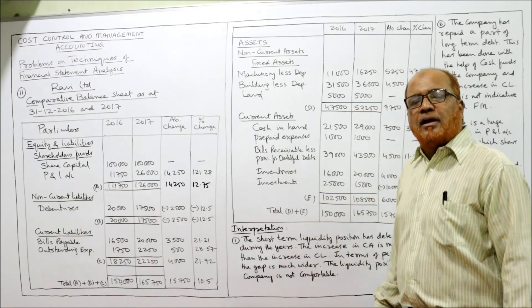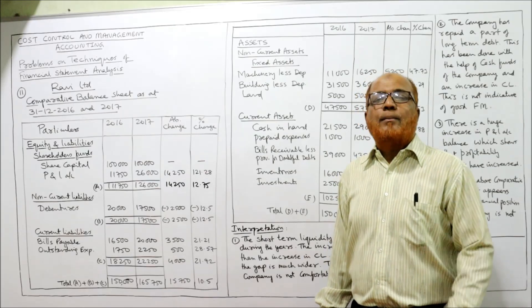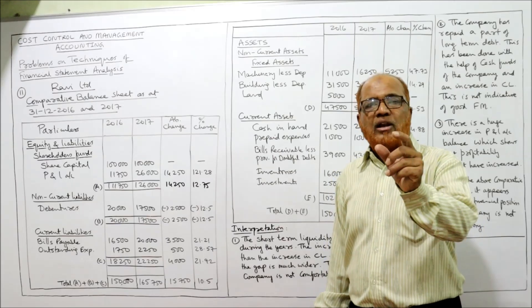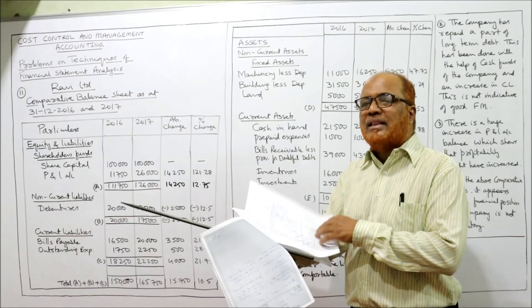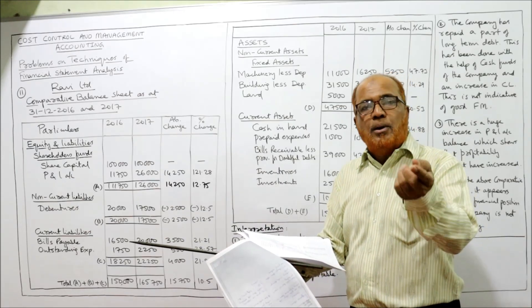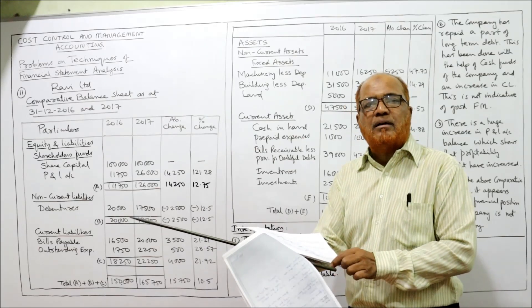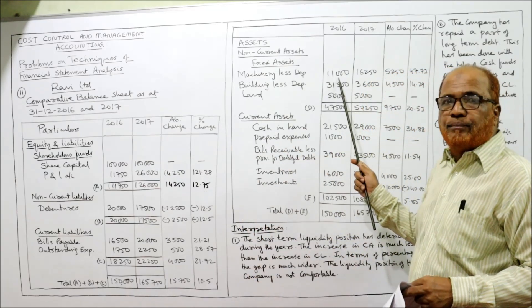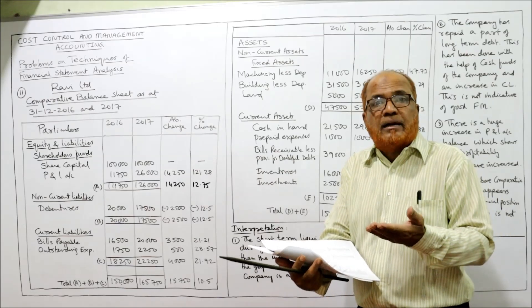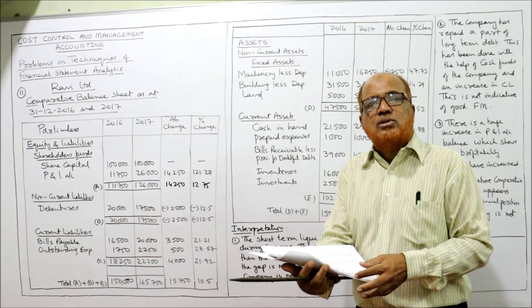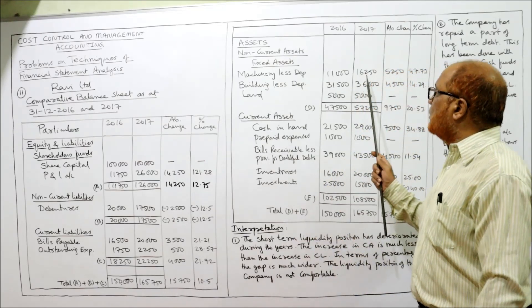An important new point: machinery is given at cost with a separate provision for depreciation, so we need the written down value — that is, cost minus depreciation. Machinery cost last year is 12,500, provision for depreciation is 1,500, so written down value is 11,000. Current year machinery cost is 20,000, depreciation is 3,750, giving written down value of 16,250.